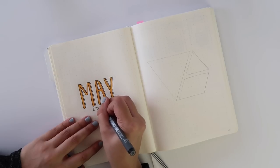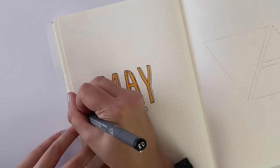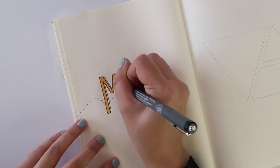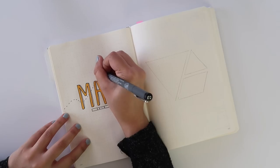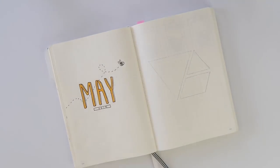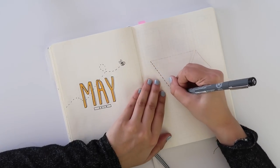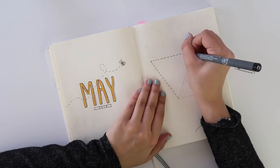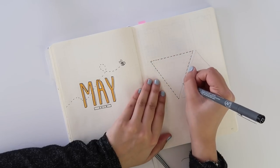I did these 3D letters and then decided to add a little bumblebee doodle because when I asked on Instagram for some May spread requests, a lot of people asked for a bumblebee theme. Although I didn't keep the bumblebee theme throughout all the pages, I did try and incorporate it into some of my spreads.